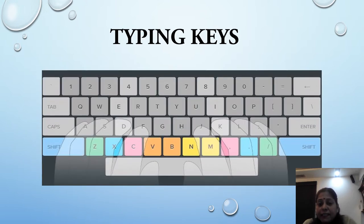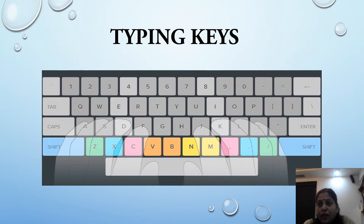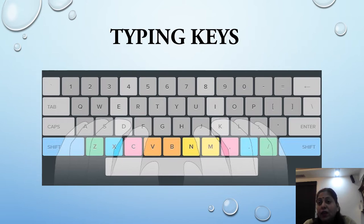What are typing keys? These keys include letters, that is alphabet keys. 26 alphabet keys are present on a keyboard from A to Z. These keys are not present in alphabetical order. These keys are used to type words, sentences, or paragraphs. Number keys are used for typing numbers and are present above the top row of the alphabet keys. These keys include punctuation — that is comma, semicolon — and special symbols like plus and minus. These keys also include the Shift, Caps Lock, Space Bar, Backspace, and Tab keys.